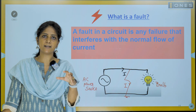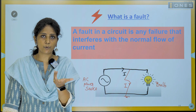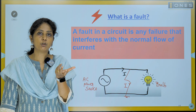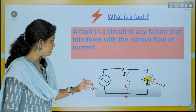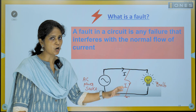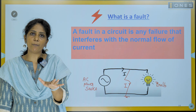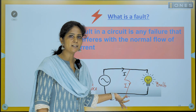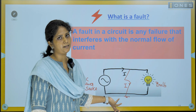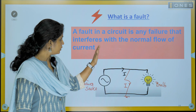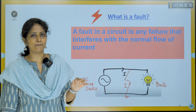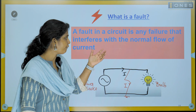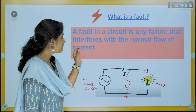If we have a low impedance path, the value of current will shoot to a very high value — a huge, enormous value. This condition or phenomenon in which the current deviates from its normal intended path — where the intended path is from the source through the bulb — is called a fault. Simply put, it is a failure that interferes with the normal flow of current.